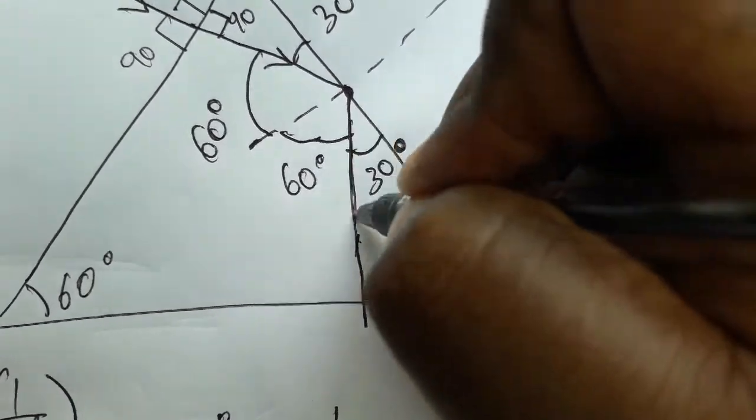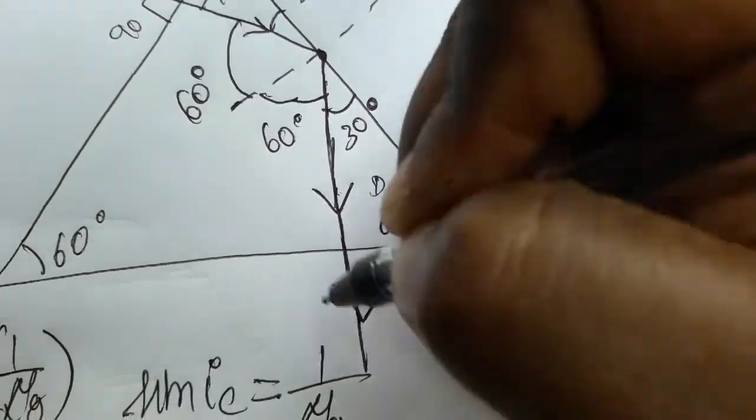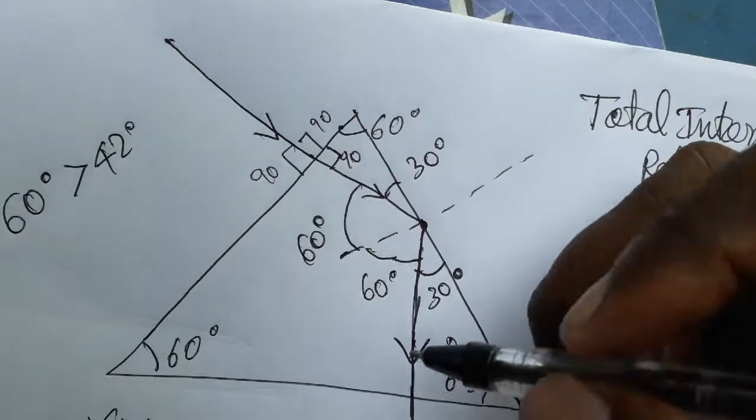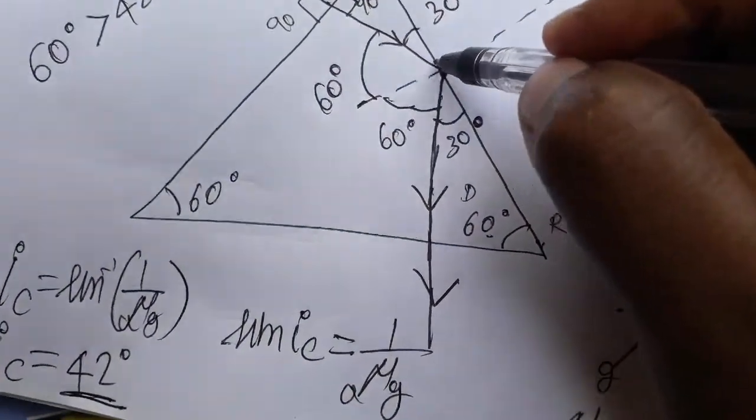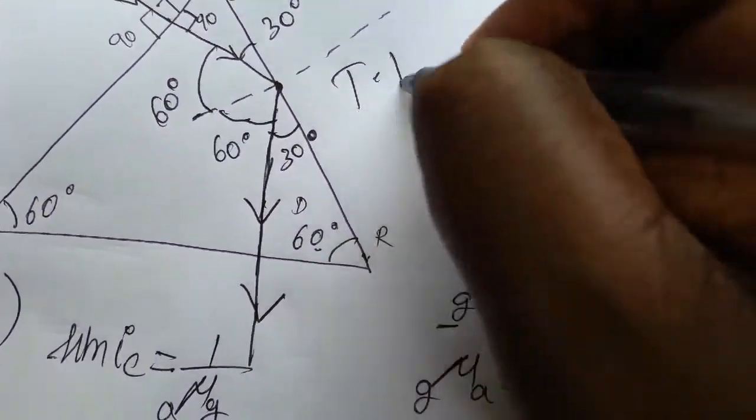That means the light entering perpendicular to the prism will be coming out like this. So this light is getting refracted through the prism - it made a total internal reflection.